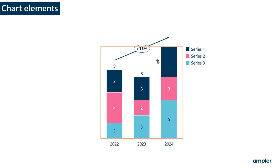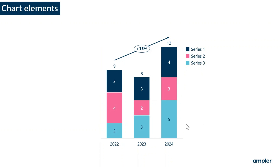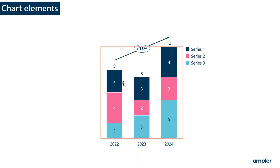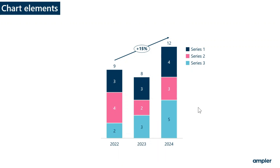In order to toggle on the total label and segment label again, go to the context menu and toggle on labels. To multi-select labels or elements, you can hold Control and select multiple labels. Once selected, you have the format menu open to format the labels. Another way to select is to select one and then hold Shift — AmpliCharts will help you select across series and categories.